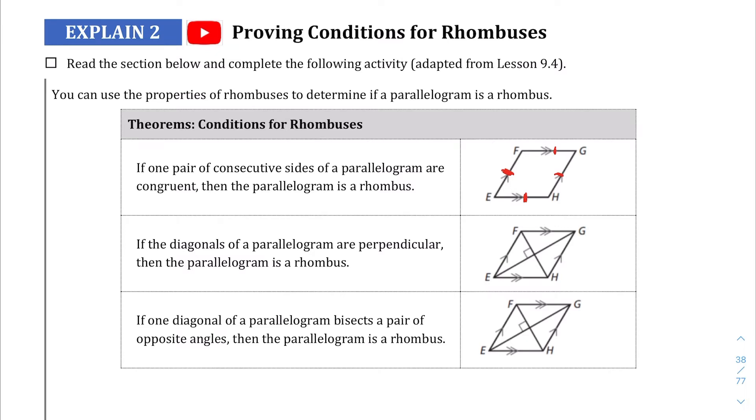Theorem two is about when you draw the diagonals, you're going to come out with a right angle or perpendicular angle for the diagonals, and it has to be a rhombus. And then theorem three says that when you create those diagonals, then the opposite angles